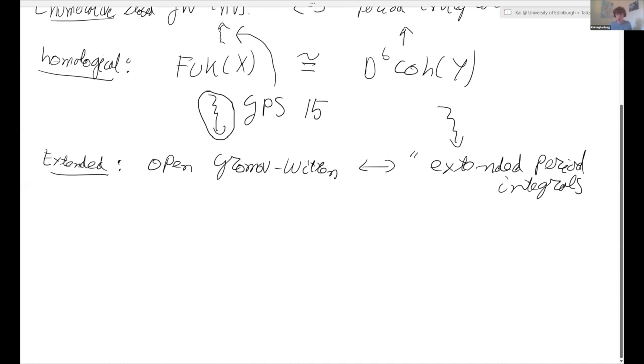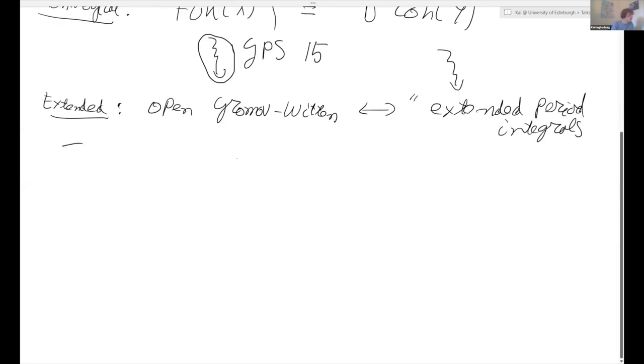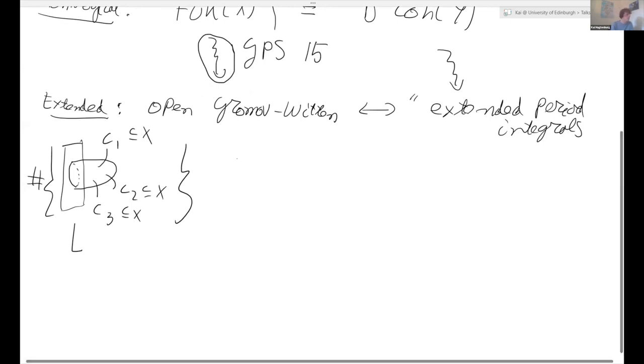So what are open Gromov-Witten invariants? Intuitively, the way you want to define them is as follows. You have your Lagrangian L. And you're counting holomorphic disks with boundary on that Lagrangian. You're taking some constraints along cycles in X. So the inputs here, there's some cycles C1, C2, C3, which are just in X. And you're counting the number of these disks like that. But in general, this number might not be well-defined. Because there's two things that can happen as you move around in the moduli space. One of them is that the disks break up, and you get two disks.